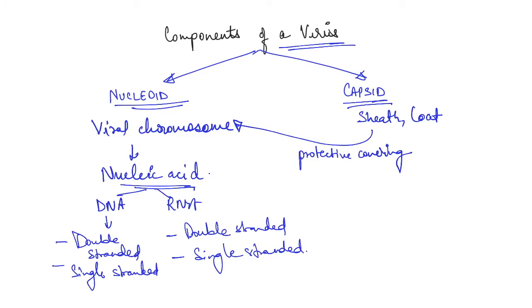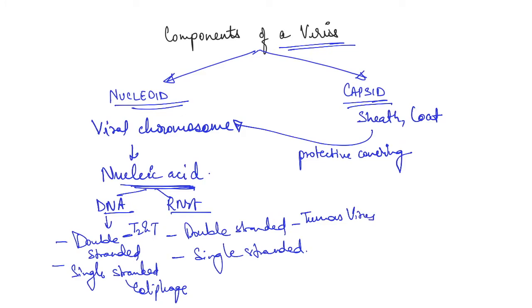Depending upon the organism, the nucleic acid composition can be DNA or RNA, double-stranded or single-stranded. For example, bacteriophages T2 and T4 are double-stranded DNA. Some coliphages occurring in E. coli are single-stranded DNA. Tumor viruses are double-stranded RNA viruses, and Polio Virus is a single-stranded RNA virus.